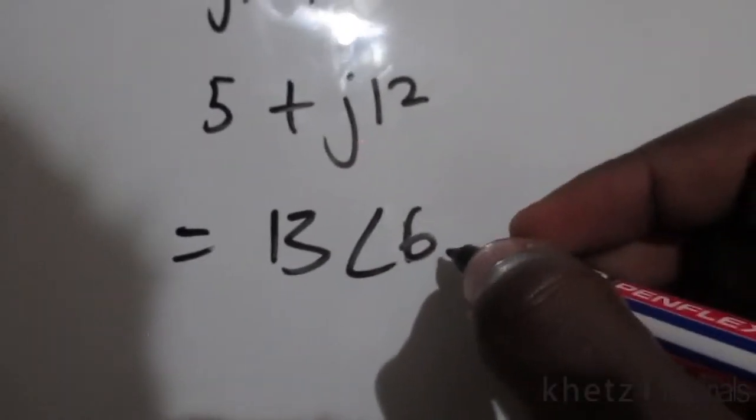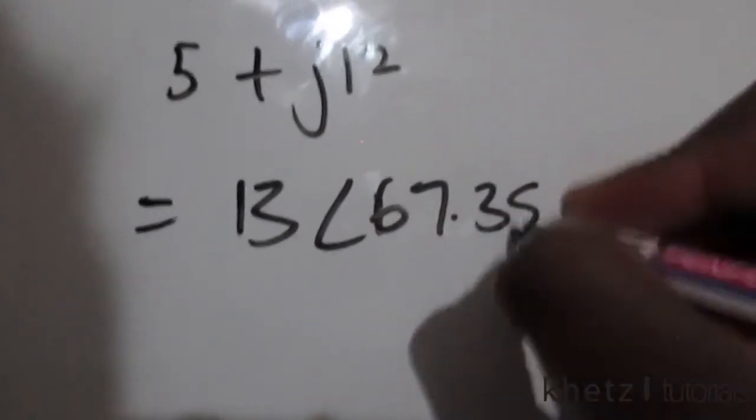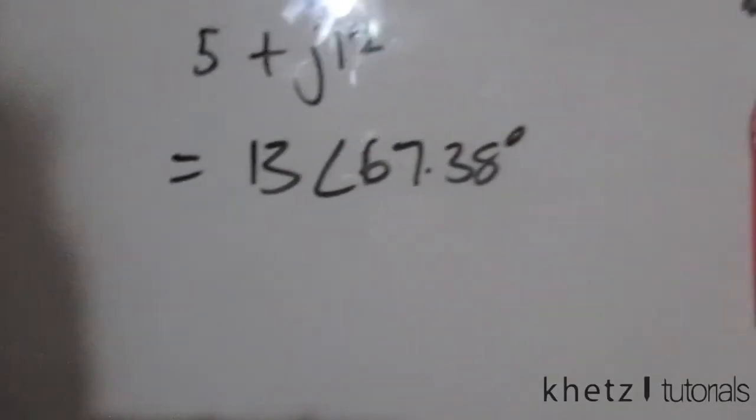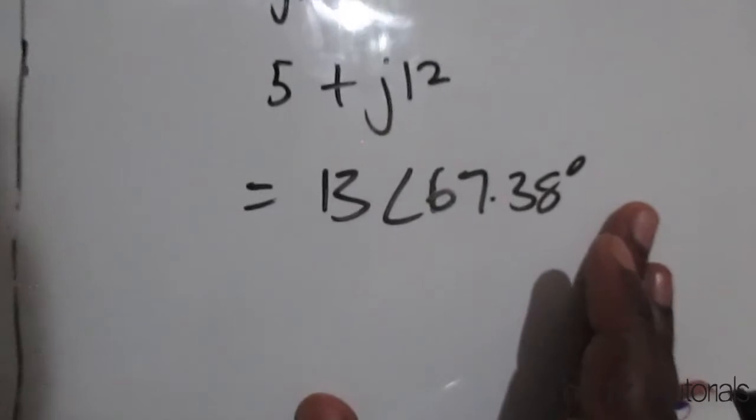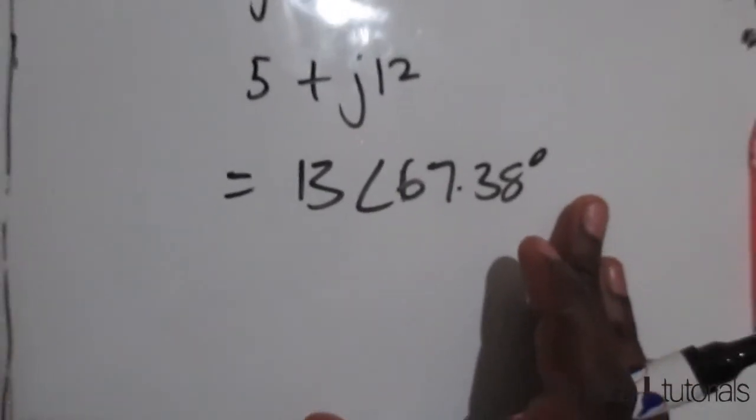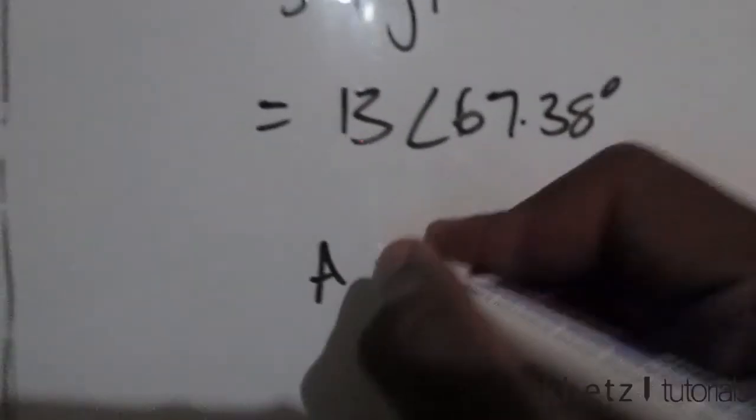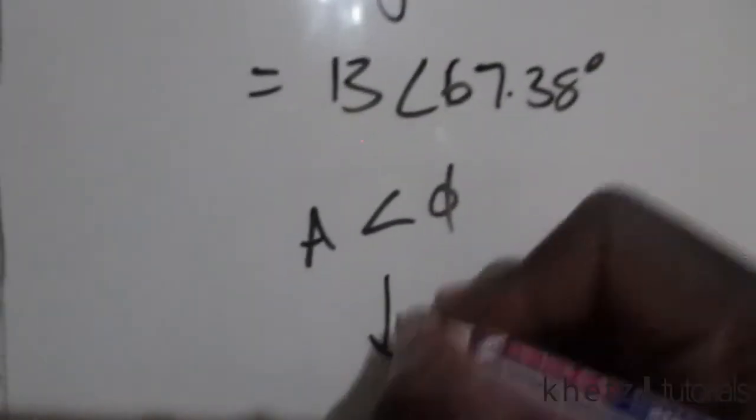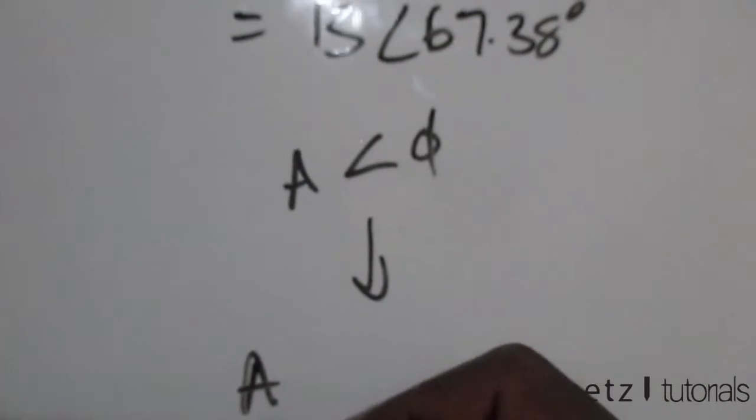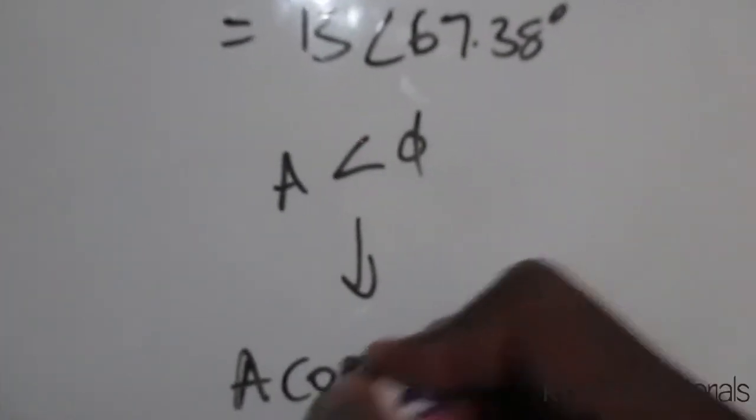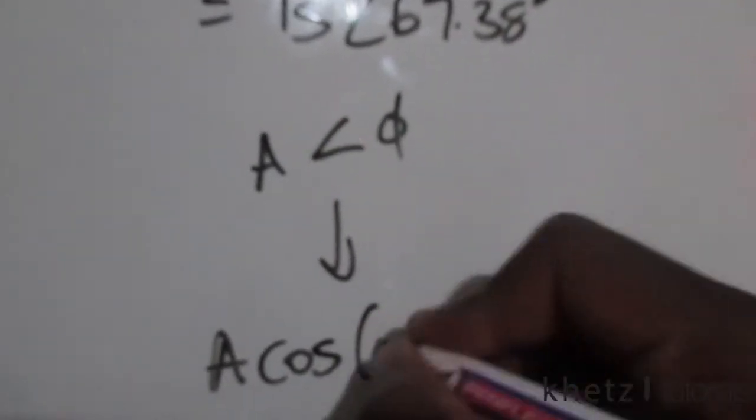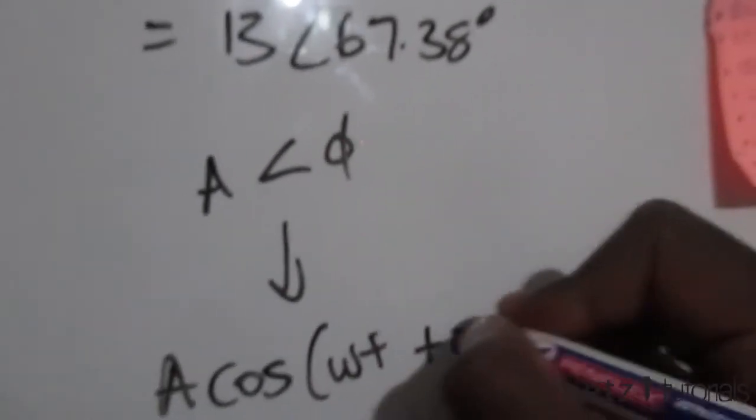So this is the same as 13 with an angle of 67.38 degrees. From this you can simply move—just a reminder that you can actually move from a polar form like this to the same sinusoid represented using a cosine.